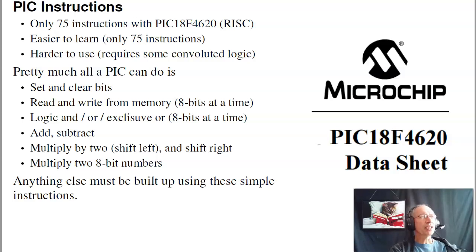Sometimes you have to use convoluted logic to do anything. For example, divide is not an instruction with this processor. So if you want to divide numbers, it's kind of convoluted. You can do it, but it might take quite a few instructions. Pretty much all the PIC processor can do is set and clear bits, read and write from memory, do logical operations like AND, OR, EXCLUSIVE OR. You can add, subtract, multiply by 2 meaning shift left, divide by 2 meaning shift right. I can do an 8-bit multiply, that's a big deal. And that's pretty much it. Anything else has to be made up from the simple instructions.